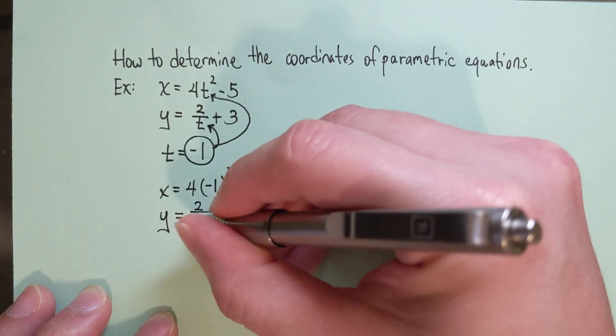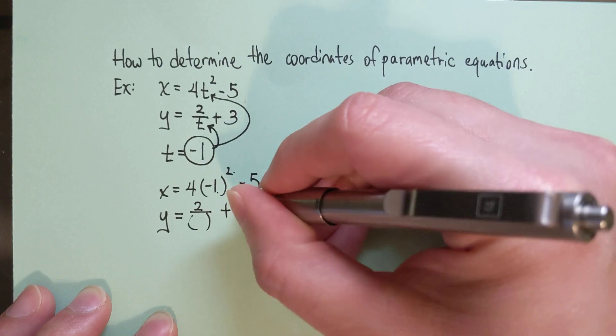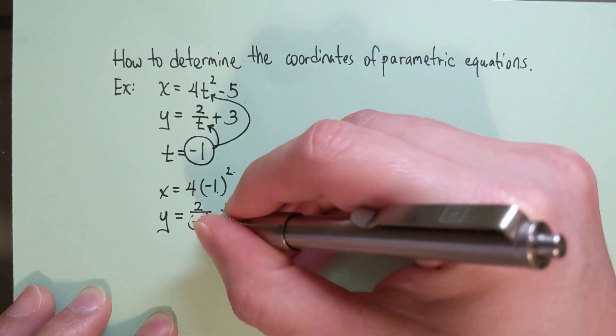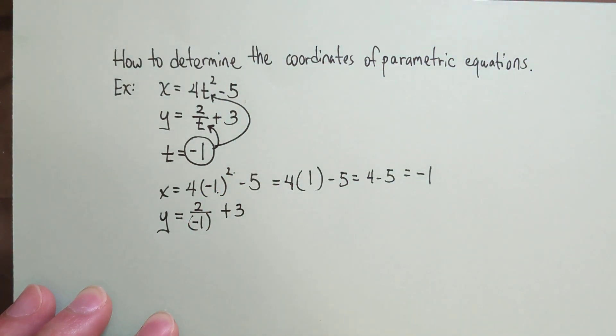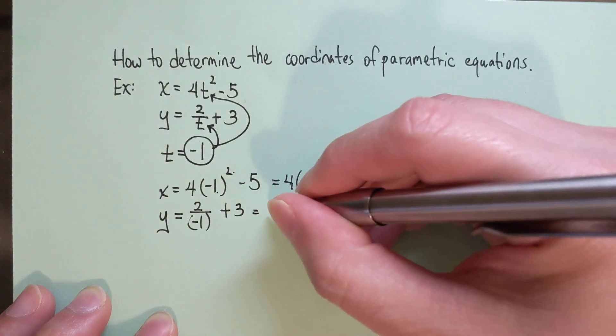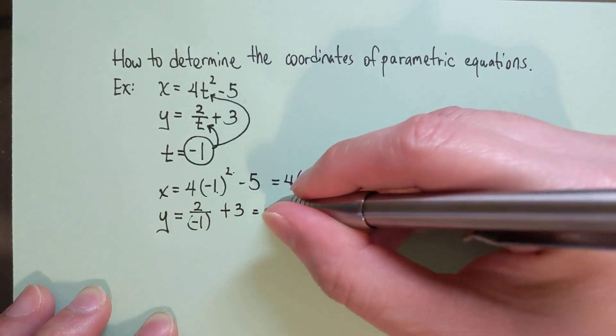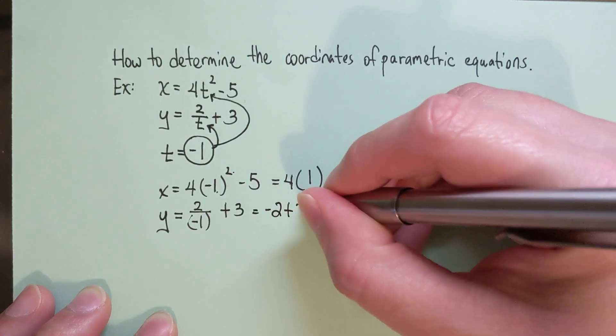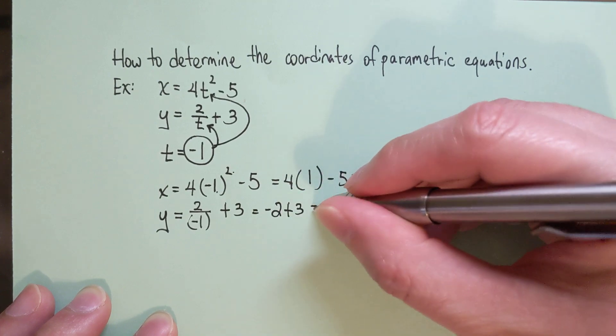So it's 2 over something plus 3, and we know that is going to be negative 1. Which means 2 divided by negative 1 is negative 2, and negative 2 plus 3 is 1.